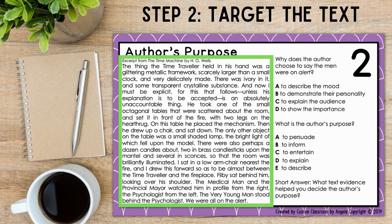Step two: target the text. Let's look at this passage about the time machine. The thing that the time traveler held in his hand was a glittering metallic framework scarcely larger than a small clock and very delicately made. There was ivory in it and some transparent crystalline substance. And now I must be explicit, for unless this explanation is to be accepted, it is an absolute unaccountable thing. He took one of the small octagonal tables that were scattered about the room and set it in front of the fire with two legs on the hearth rug. On this table he placed the mechanism.